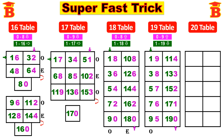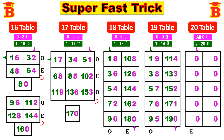Next, the 20th table is very easy. First step: write all 0s. So write 0, 0, 0, 0, 0, 0. Again next column also: 0, 0, 0, 0, 0. Second step: write even numbers from 2 to 20 only. Start from here and write all the even numbers: 2, 4, 6, 8, 10, 12, 14, 16, 18, 20.